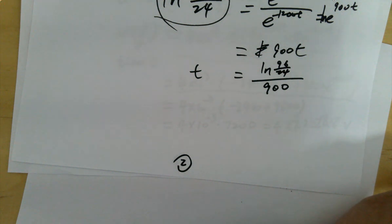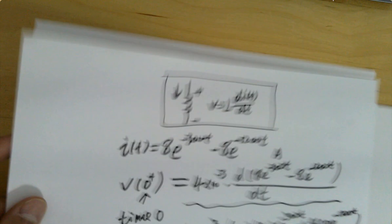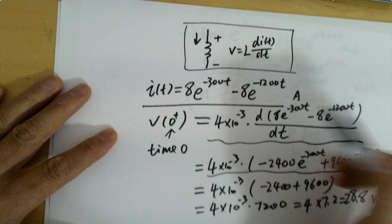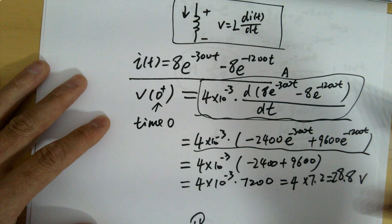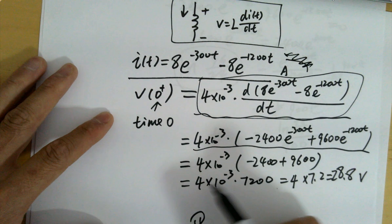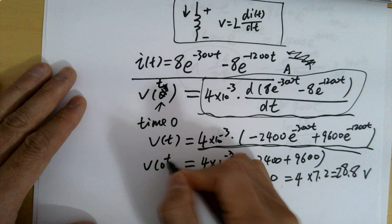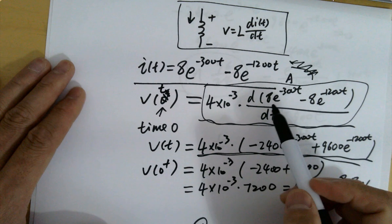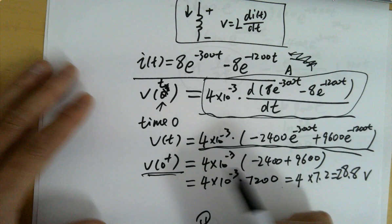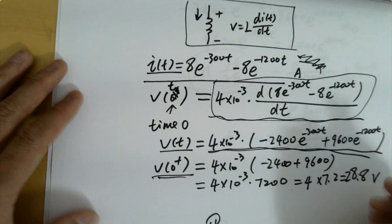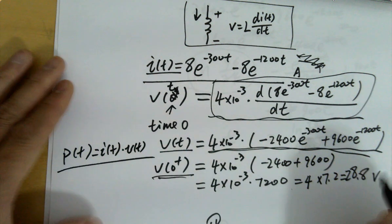Next: how do we calculate the power delivered to the inductor? We already have i(t) and v(t), so power p(t) = v(t) × i(t). That's how you calculate the power delivered to the inductor — just multiply the voltage and current expressions together.